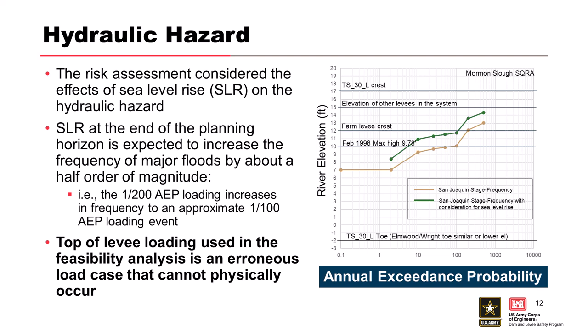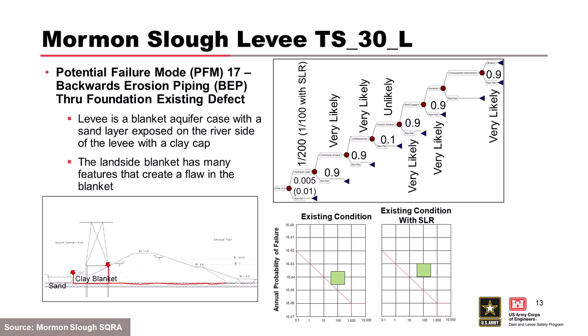A rise in base sea level raises the tail water for riverine flows from the mountains, shifting everything up. What was once a 10-year event at the end of the planning horizon becomes a two- or three-year event with sea level rise. A 100-year event becomes more like a 10-year event — about an order-of-magnitude shift in frequency of loading. Note: this is sea level rise only, not climate change hydrologic impacts, which were not assessed.